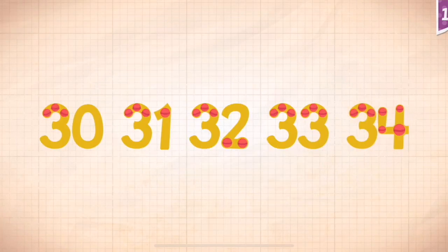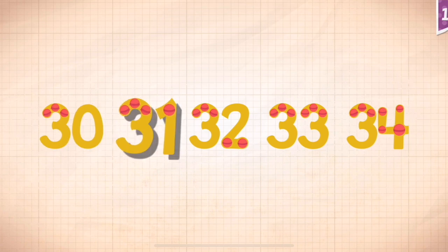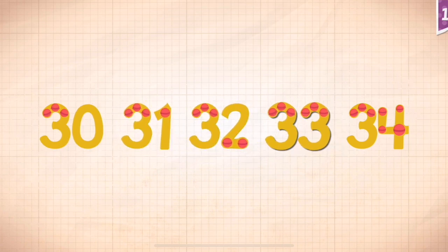Count by 1s starting at 30: 30, 31, 32, 33, 34.